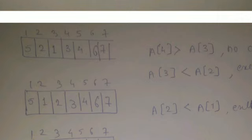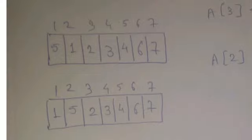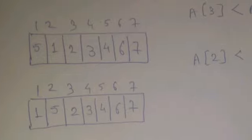Now check positions 4 and 3 — recap: we checked 7,6 then 6,5 then 5,4. Now checking 4 and 3: the numbers there are 1 and 3, which are already in sorted sequence. Then check positions 3 and 2: at positions 3 and 2, the numbers are 2 and 1. Since 1 is less than 2, we exchange them. After swapping, the array becomes [5, 1, 2, 3, 4, 6, 7].